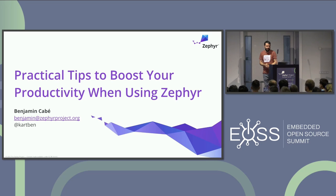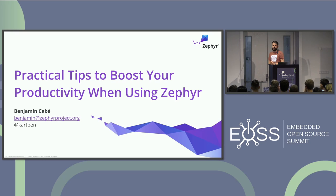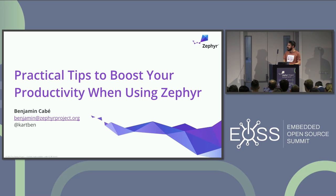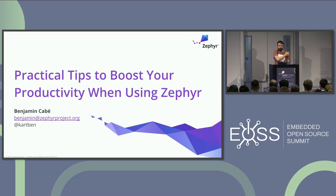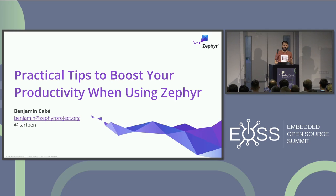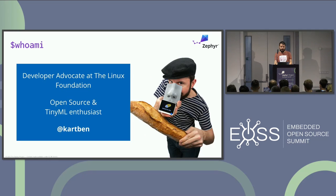I want to share some tips and pointers to things that might help you be more productive when writing embedded software in general, no matter what platform you're using. If you happen to use Zephyr and the Zephyr real-time operating system, the tips might be even more useful, but it's actually just talking about some of the things that can help you when it comes to emulating, when it comes to trying to get and to improve your security story.